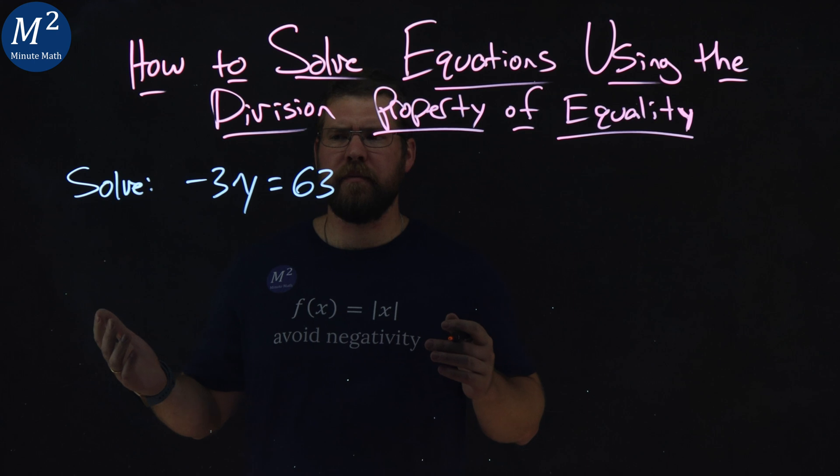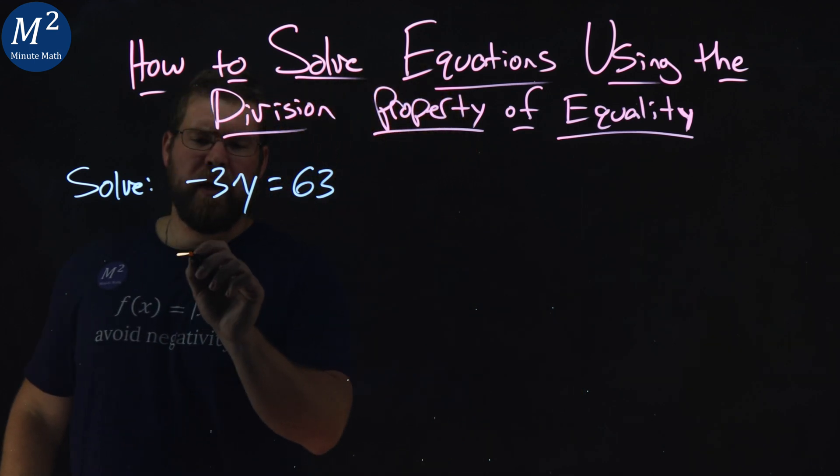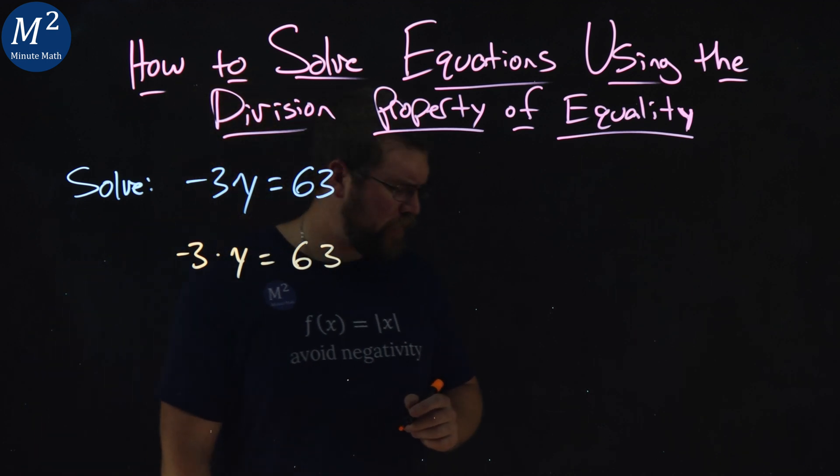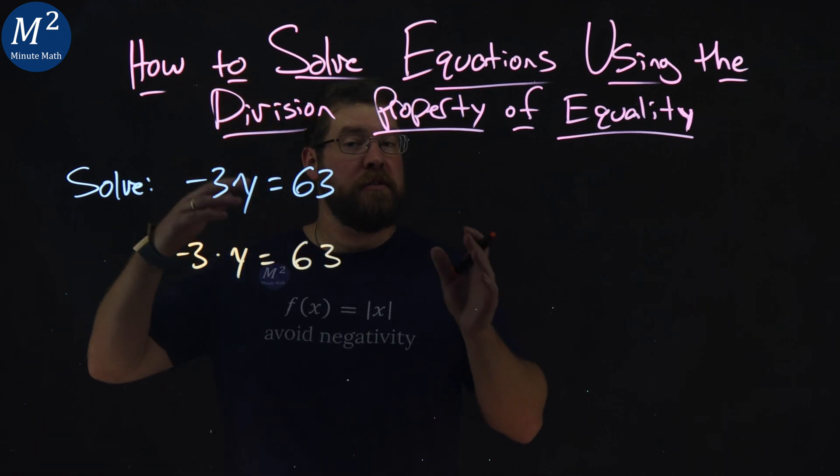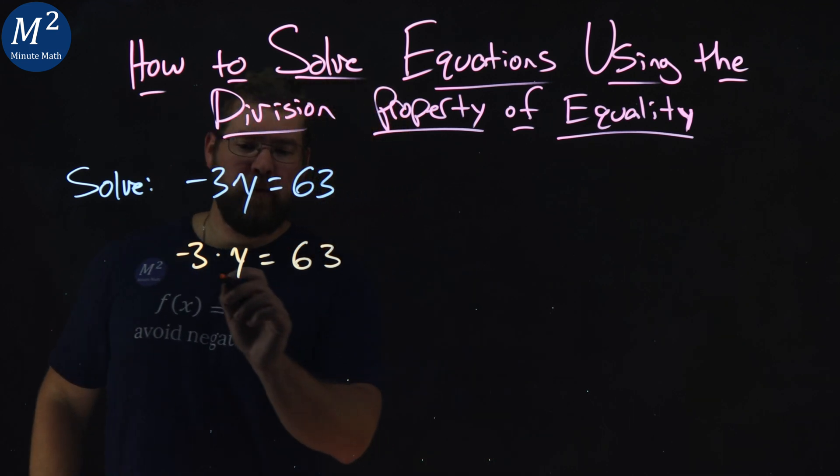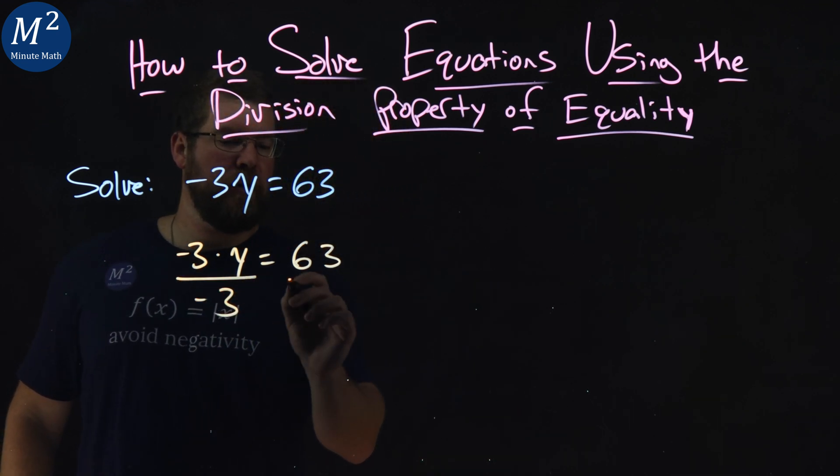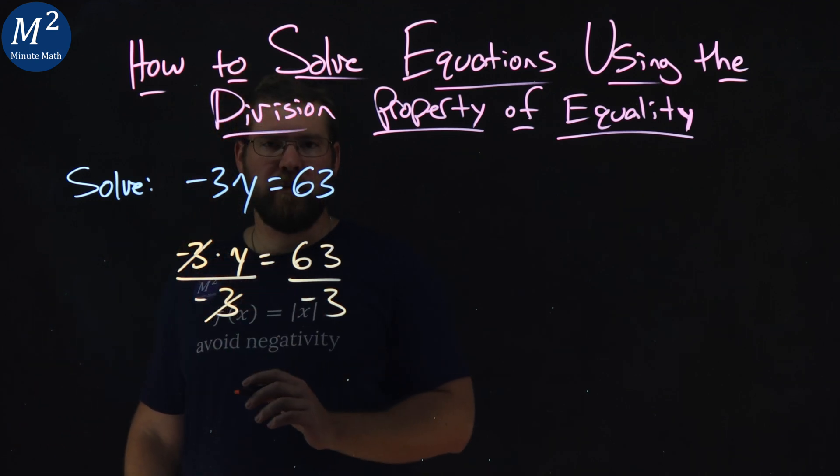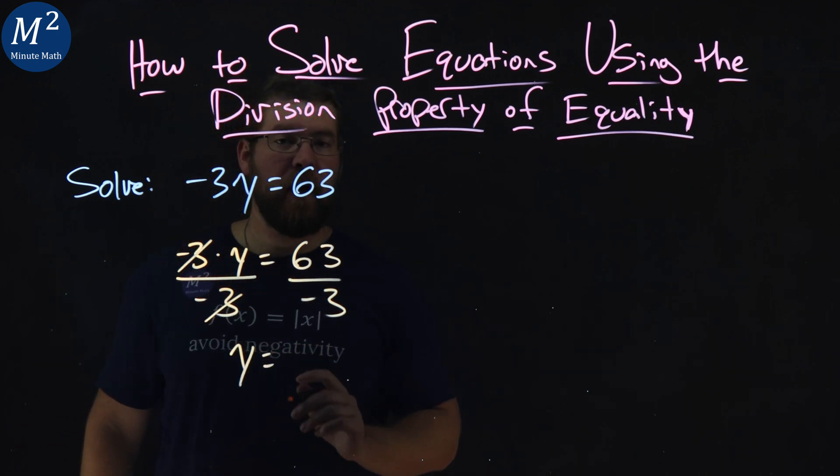Okay, how does that help us? Negative 3y is negative 3 times y equals a positive 63. Now, opposite multiplication is division, so if we have a negative 3 being multiplied by y, if we divide both sides by a negative 3, the left-hand side negative 3 cancels, and we have y by itself is what we want.